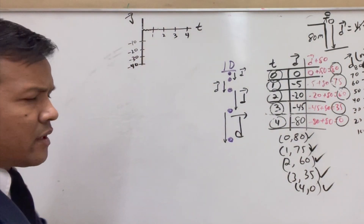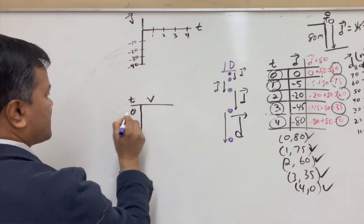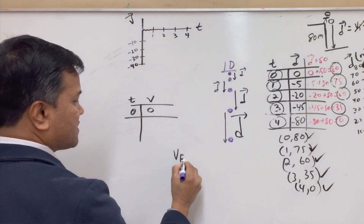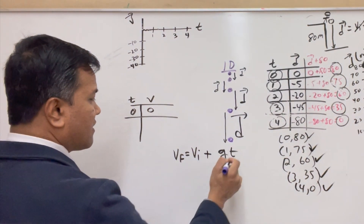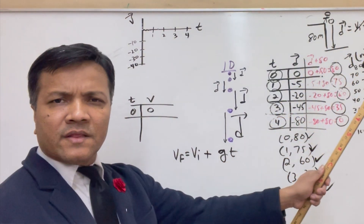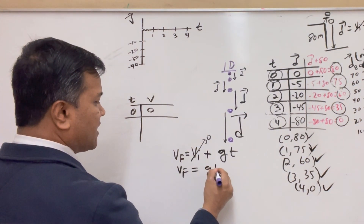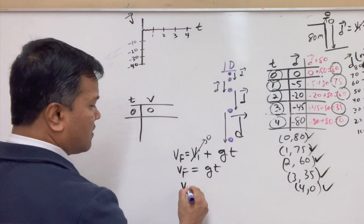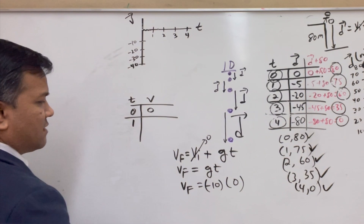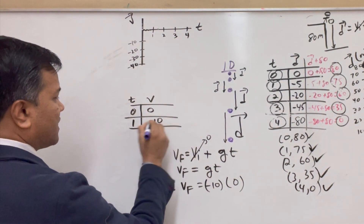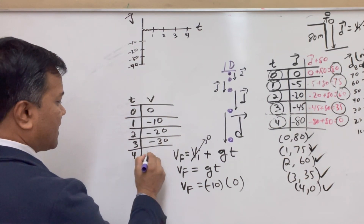Where do those points come from? The equation is: velocity final equals velocity initial plus a times t, and a is constant at negative 10. Initial velocity is 0. So Vf equals negative 10 times t. At t equals 0, velocity is 0. At 1 second, negative 10. At 2 seconds, negative 20. At 3 seconds, negative 30. At 4 seconds, negative 40.